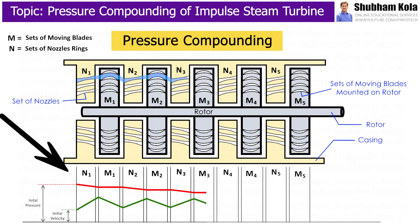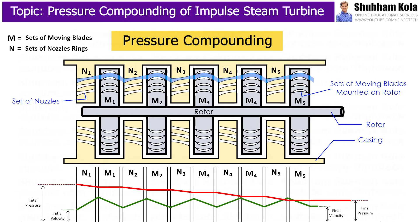Pressure and velocity variation for the pressure compounded steam turbine is shown here, where M1, M2, M3 represent the set of moving blades and N1, N2, N3 represent the set of nozzles.